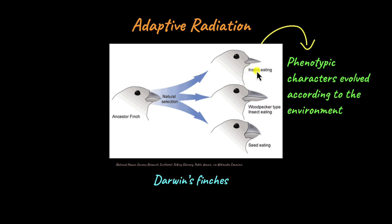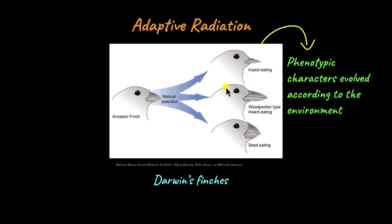For example, insect-eating finches had long thin beaks needed to pick up insects from the ground and eat. Seed-eating finches had a flat and pointy beak needed to break open seeds. He noticed that the different beak shapes and feather colours all depended on the environment in which these finches evolved.